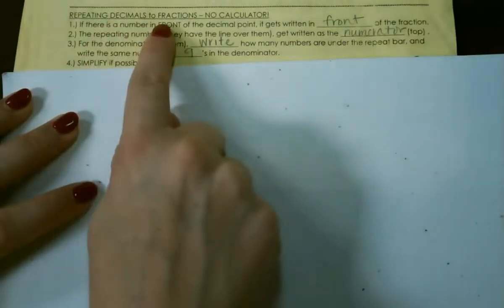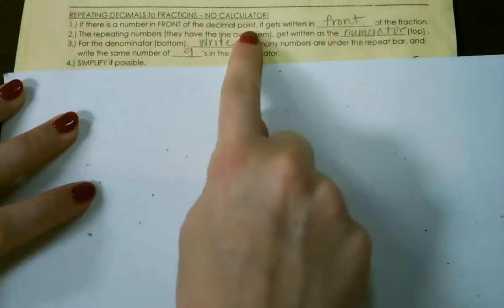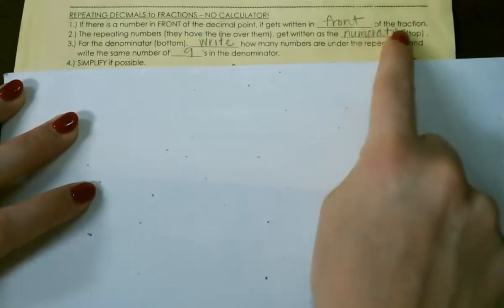Let's work on repeating decimals to fractions without a calculator. If there's a number in front of the decimal point, it gets written in front of the fraction.